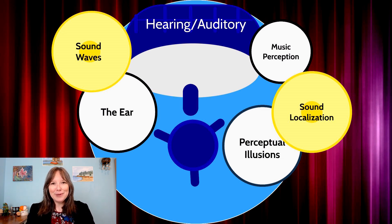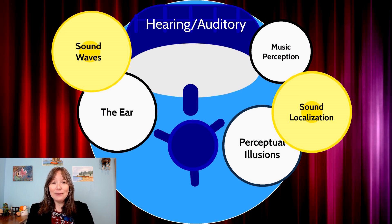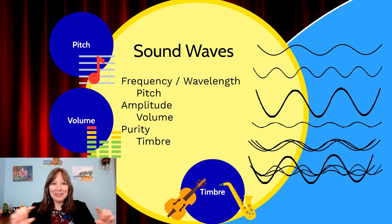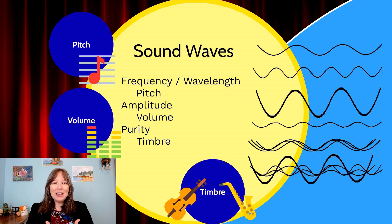Auditory or hearing is a pretty advanced sense. Like vision, it involves the use of waves — now we're talking about sound waves. Sound waves have similar wave principles as light waves: they have frequencies, which is how often they produce crests and troughs; wavelengths, which is the stretch of the crests and troughs; amplitude, which is the height of the crests and troughs; and purity, which is the isolation of one type of wavelength versus the overlap of different waves.